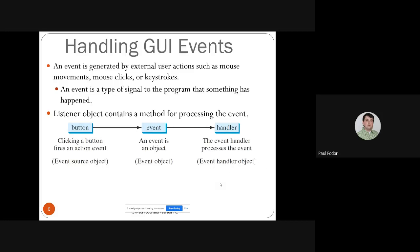To recap: how do we handle GUI events? An event is generated by an external user action such as a mouse movement, mouse click, or keystrokes — it's a signal to the program that something has happened. We define event listeners whose objects contain methods to process that event. When a click happens on a source like a button, an event is triggered, an object is created by the JVM, and it calls an event handler that processes that type of event. The event itself is passed as a parameter to the handler, so the handler can extract different properties from it.